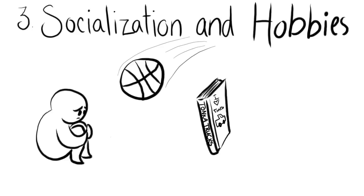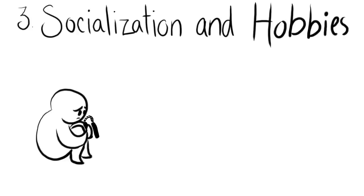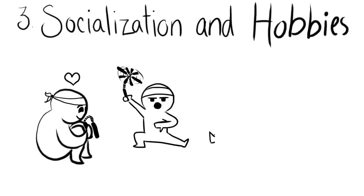Number 3, Socialization and Hobbies. High functioning depression comes with isolation. To fix this, get involved in your favorite activities or hobbies. For example, if you like to practice martial arts, then take a class. This way, you are blowing stress off by doing things you love, but at the same time, you are socializing with others.